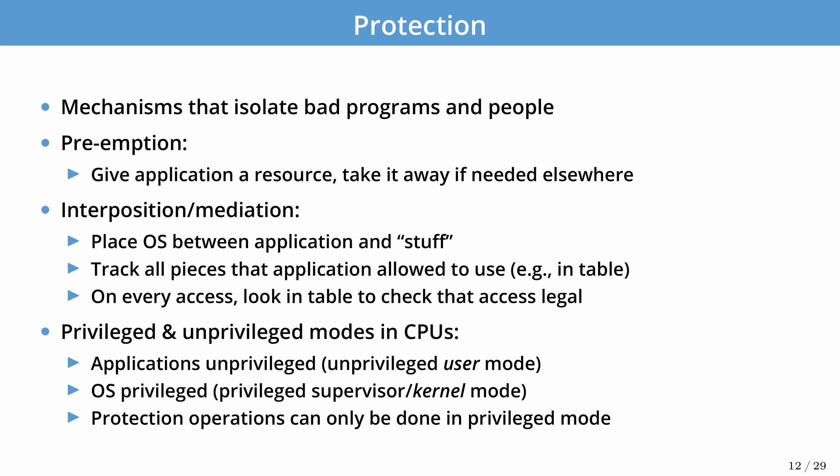To summarize the protection mechanisms we've been looking at: the first is preemption, where we take away resources if they're needed elsewhere in the system. The second is interposition or mediation — the OS sits between the application and the hardware, allowing it to check and verify every access to a resource, ensuring nothing is being abused, no unfair share is given out, and other users' data isn't handed to a malicious application or user.